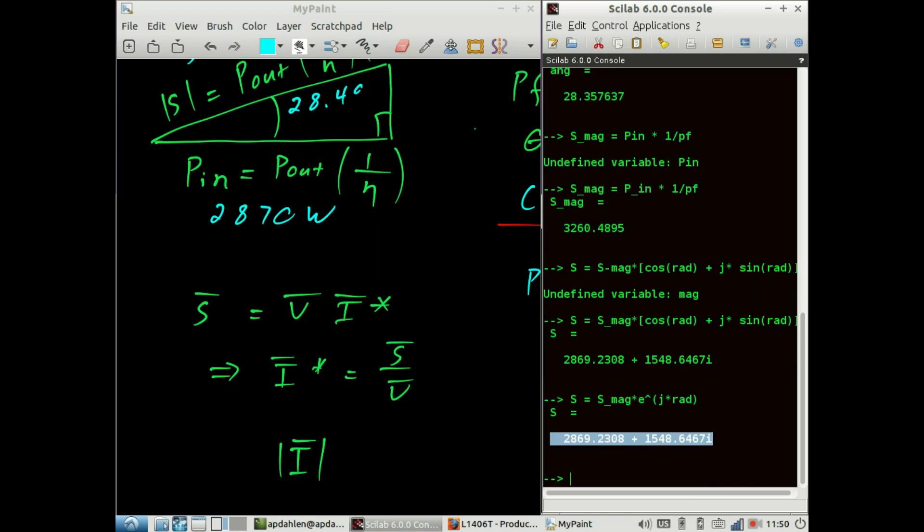We could have saved some typing if we used the complex exponential form of this, in which case we would have said that S is equal to S magnitude times e raised to the j times radians. Notice how these numbers are identical? The math behind these complex exponentials is just beautiful.